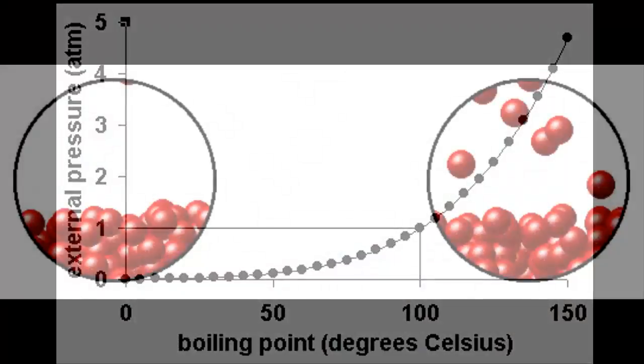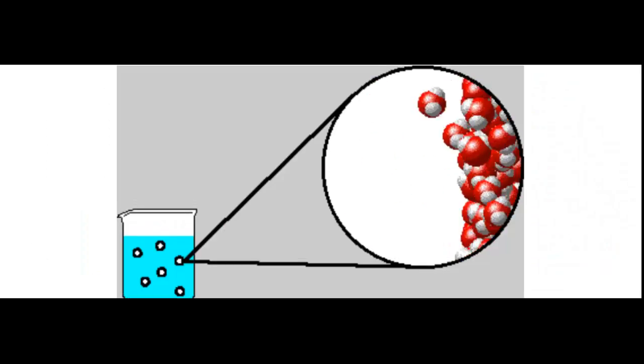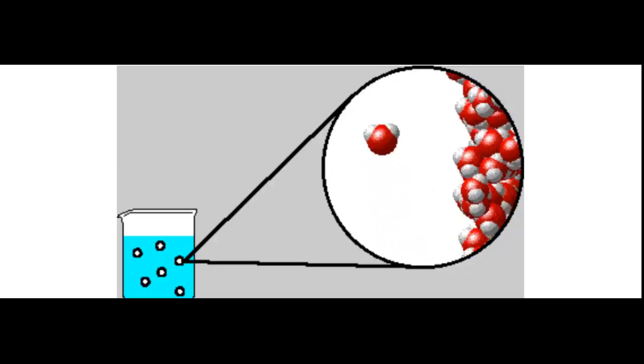As you can see here, the molecules on the left are at lower temperature and less energy, whereas molecules on the right are at higher temperature and hence they become vapor much more easily. Now as we keep raising the temperature, the vapor pressure becomes more and when it equals the pressure of the gas, the liquid starts to boil.